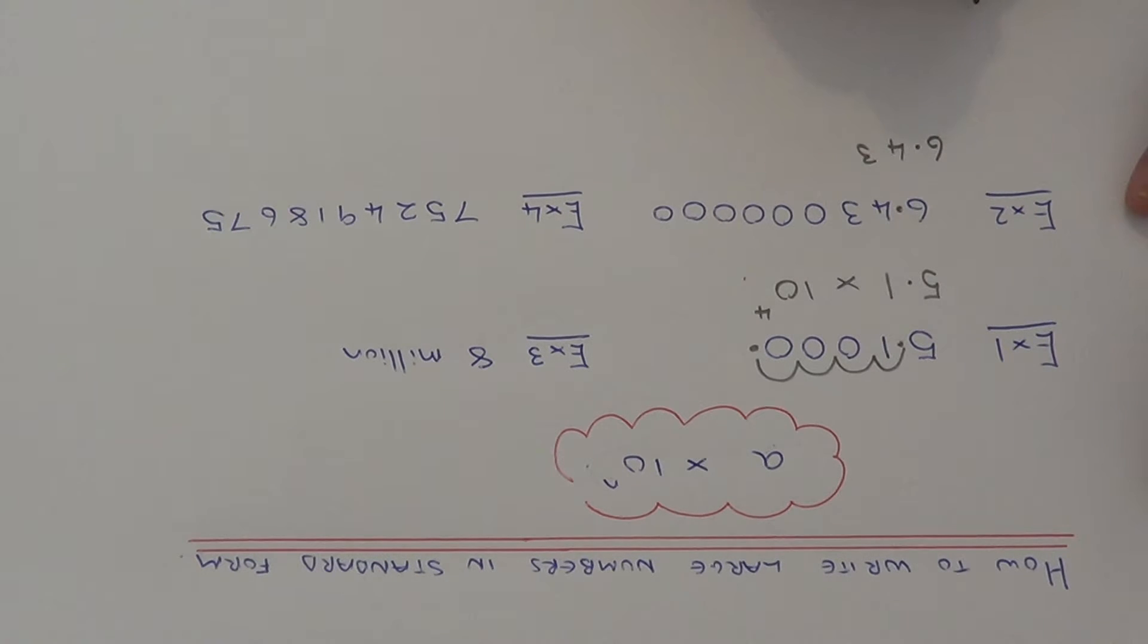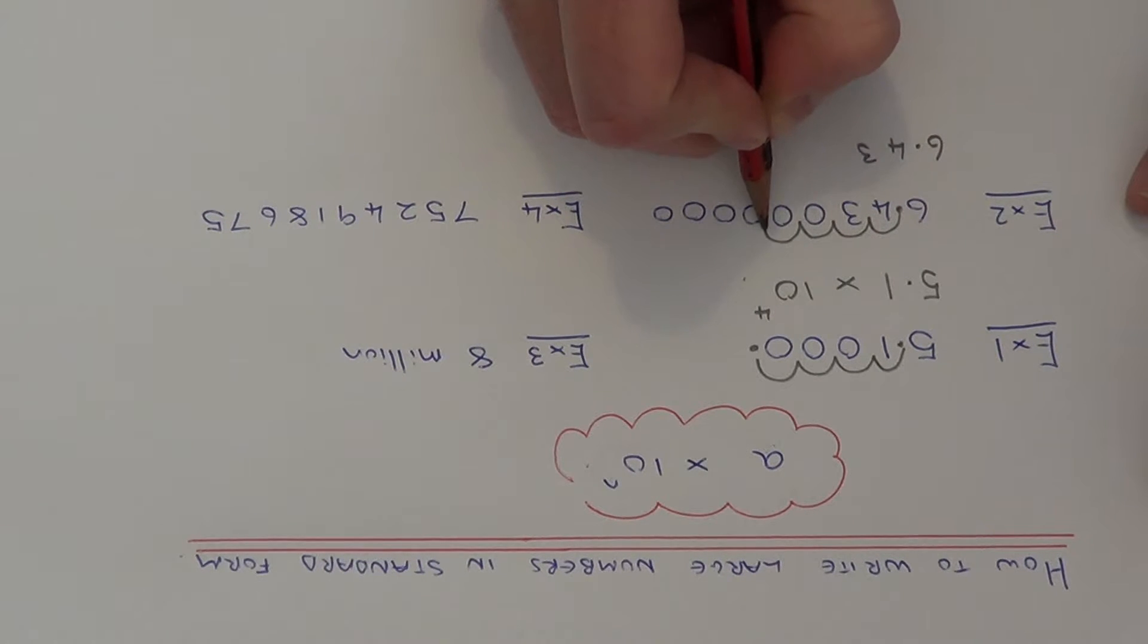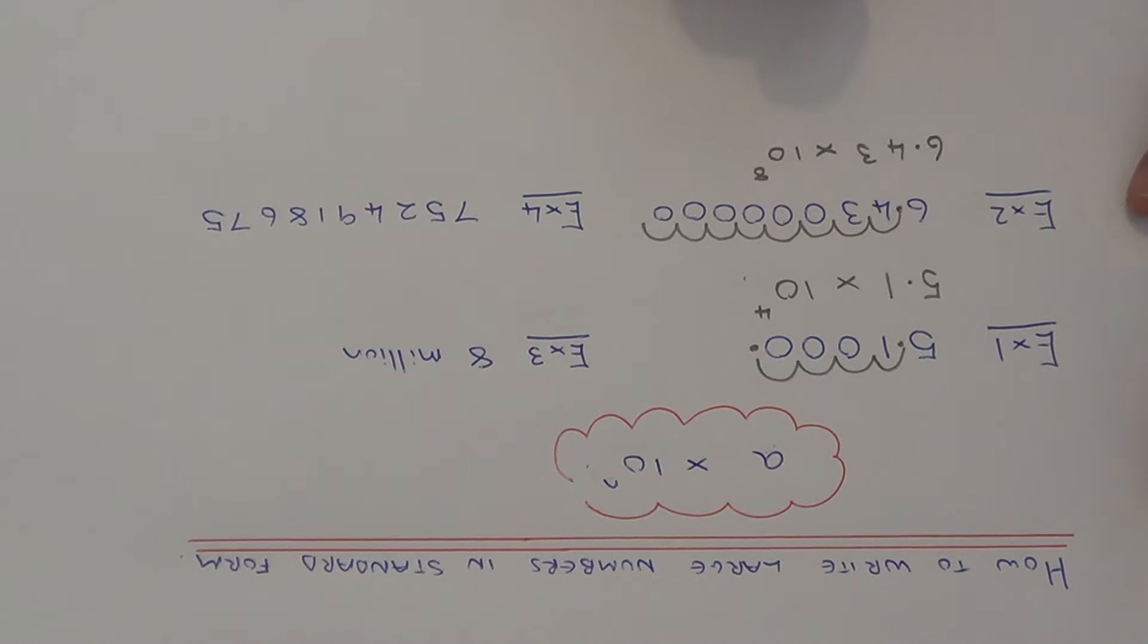So we've put the decimal point here. So how many times have we got to multiply this by 10 to give us the original number? So again, let's just count how many places we've moved the decimal point. We've got 1, 2, 3, 4, 5, 6, 7, 8. So we need to multiply it by 10, and we do this 8 times.